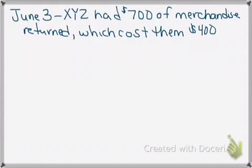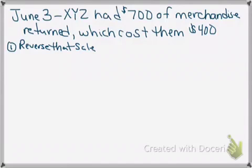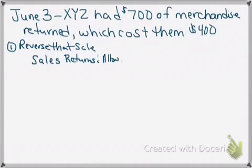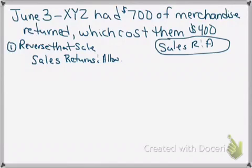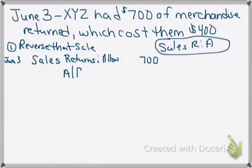XYZ had seven hundred dollars of merchandise returned which cost them four hundred dollars. So if merchandise is returned we have to reverse that sale. The way we reverse a sale is it no longer is part of our accounts receivable because it's been returned. We use an account called the sales returns and allowances account — normally abbreviated as sales R&A. They had seven hundred dollars returned, so that goes into the sales returns and allowances account, and the other side removes it from accounts receivable since we're no longer owed that money.